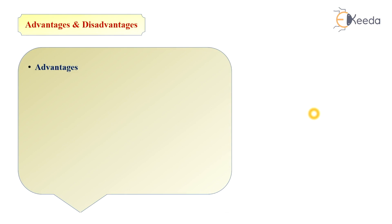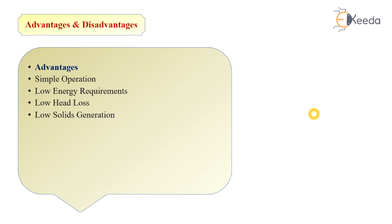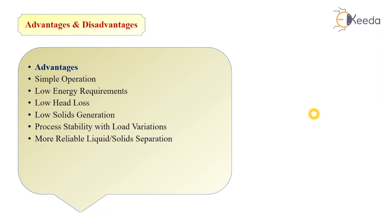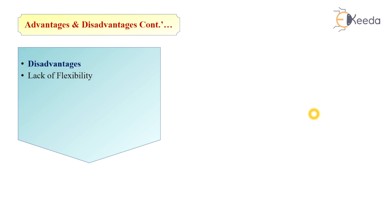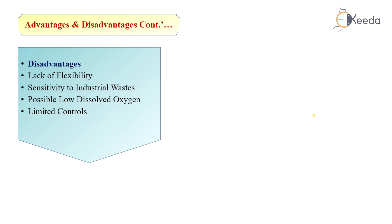Advantages and disadvantages of RBCs: Advantages include simple operation, very low energy requirement, low head loss, low solids generation, process stability with load variations, reliability for liquid-solid separation, no sludge return required, and high contact time with high effluent quality for both BOD and nutrients. Disadvantages include lack of flexibility, sensitivity to industrial waste, possible low dissolved oxygen, limited control over the process, and limited operator experience — proper training should be provided.